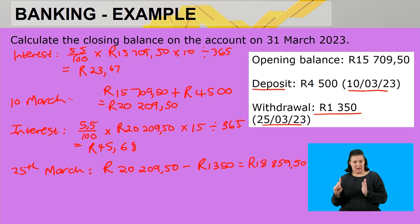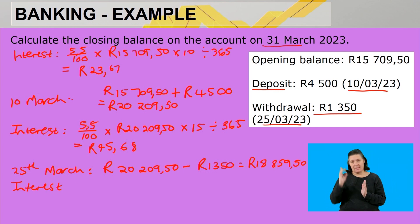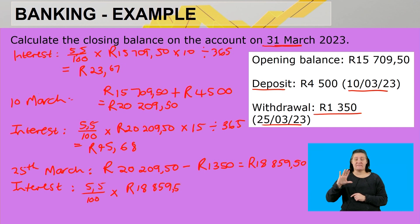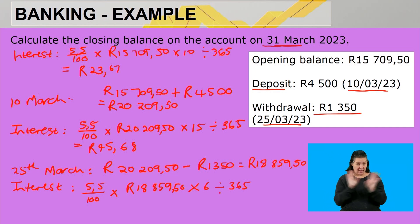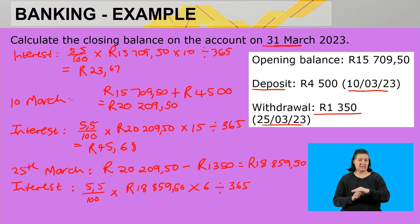From the 26th all the way up to the 31st, that gives us six days. I now calculate interest for this time frame up to the end of the month. The interest is 5.5 percent of R18,859.50, multiplied by 6 days, divided by 365. When I do this calculation, I get the interest for this period of seventeen rand and five cents.